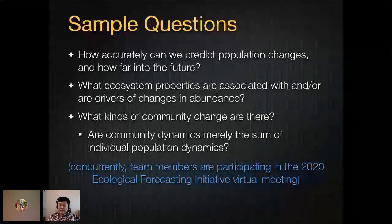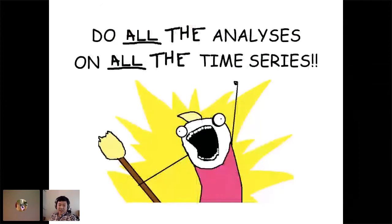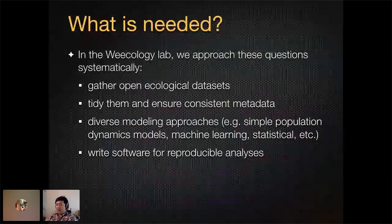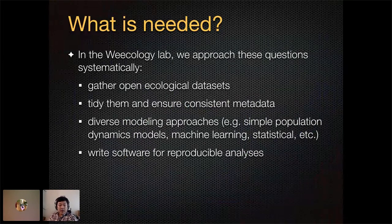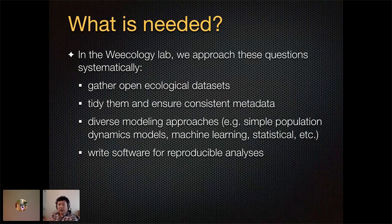To summarize our perspective on research and what we're interested in doing: we basically want to do all the analyses on all the time series. In order to approach that kind of work, we really have to focus on data analysis in a systemic way. We do this by gathering open ecological data sets, tidying them, and ensuring that there's consistent metadata about things like location and the taxonomic ID of species and populations.